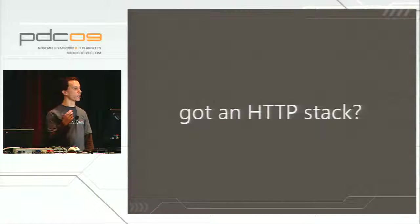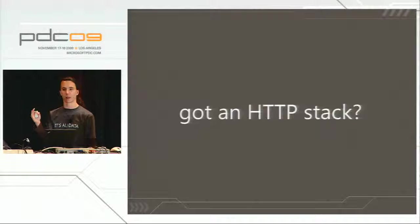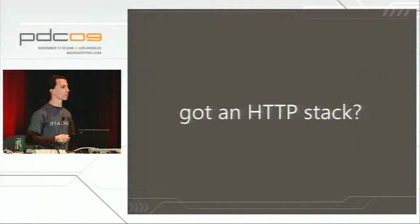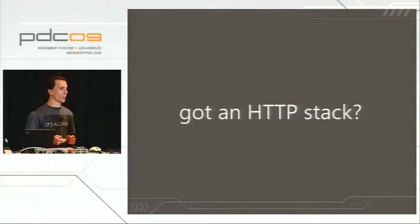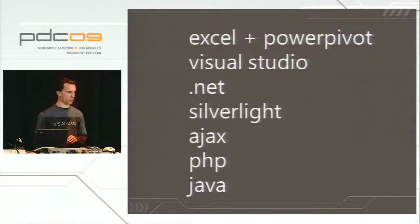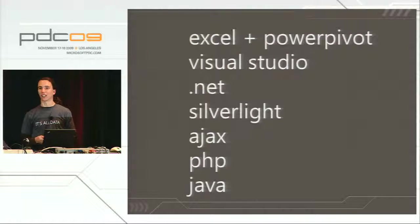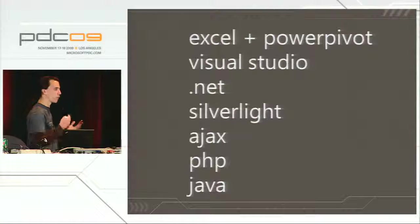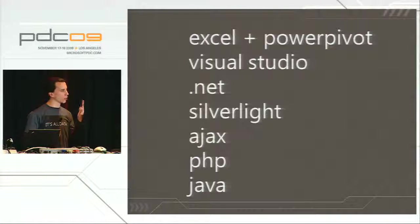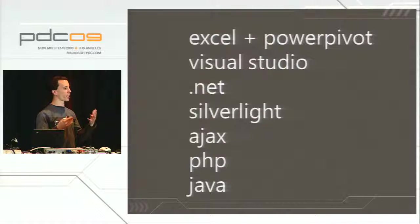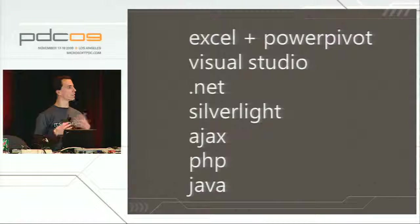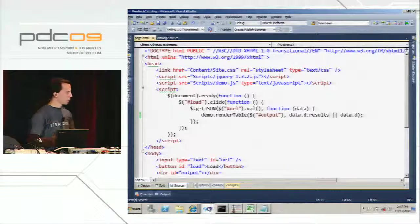So we talked about servers and barriers of entry. Let's talk clients. The simple rule is: if you have an HTTP stack, you're good — you can talk to the system. The only question from there is how much code you want to write versus having us write it. The more you go up in the stack, we introduce abstractions so you write less code, usually at the cost of having the abstraction in the middle. We have client stacks for Excel, .NET, Silverlight, Ajax, PHP, and Java. Visual Studio knows about the OData protocol. The PHP and Java ones are open source — you can download them, look at the source, and change them to fit your needs.